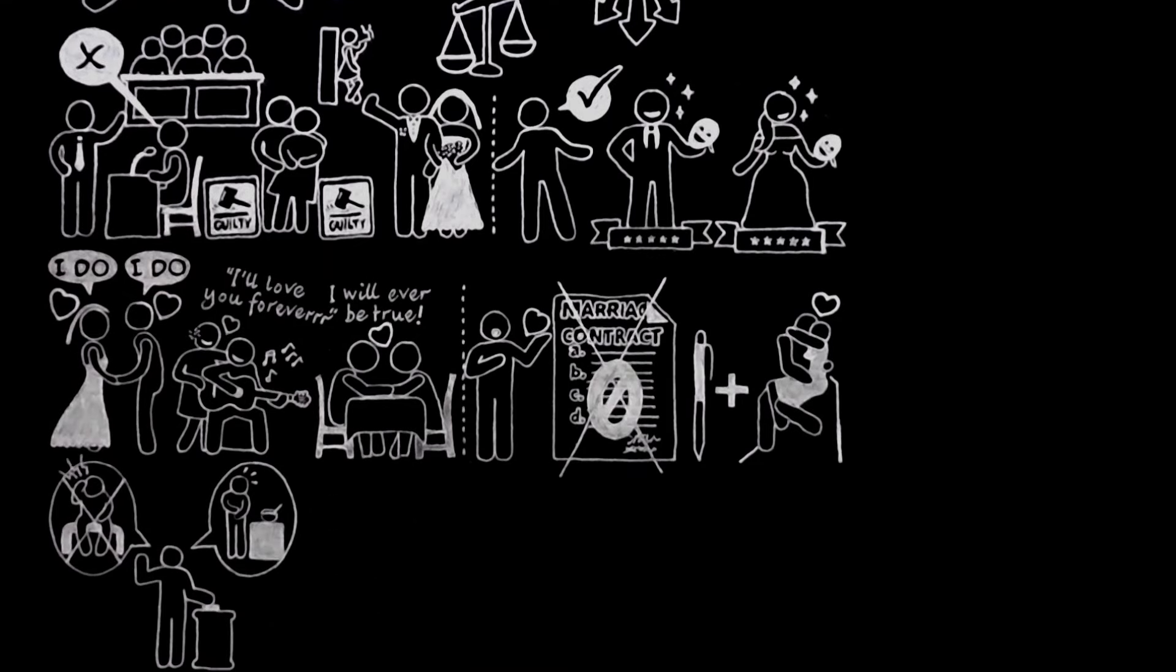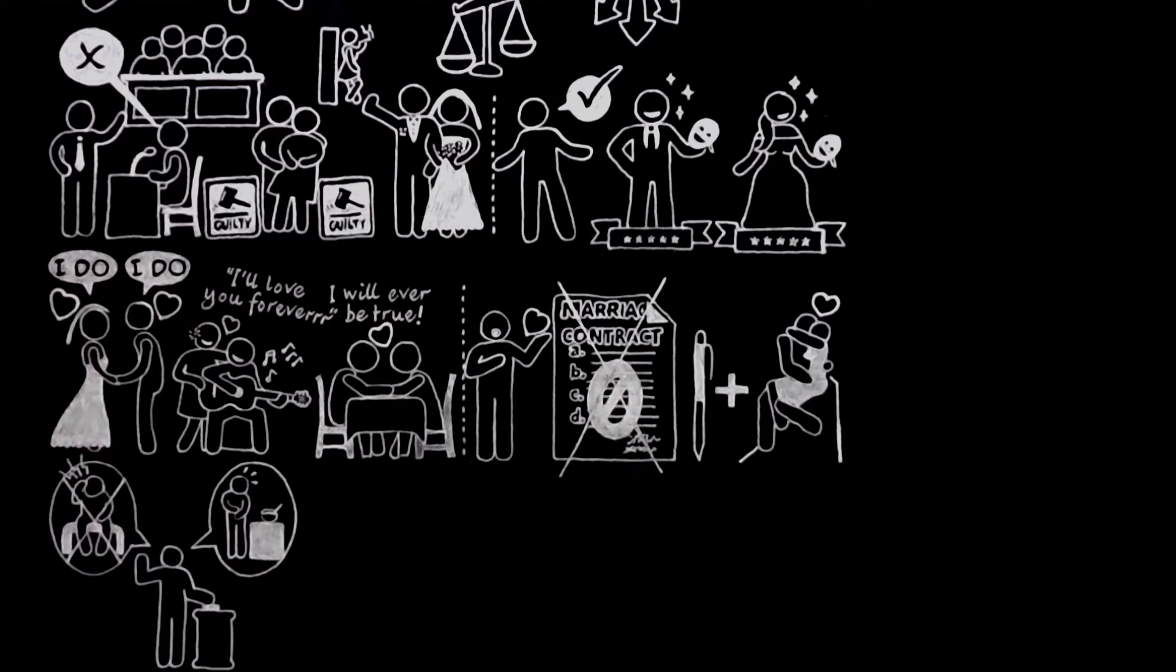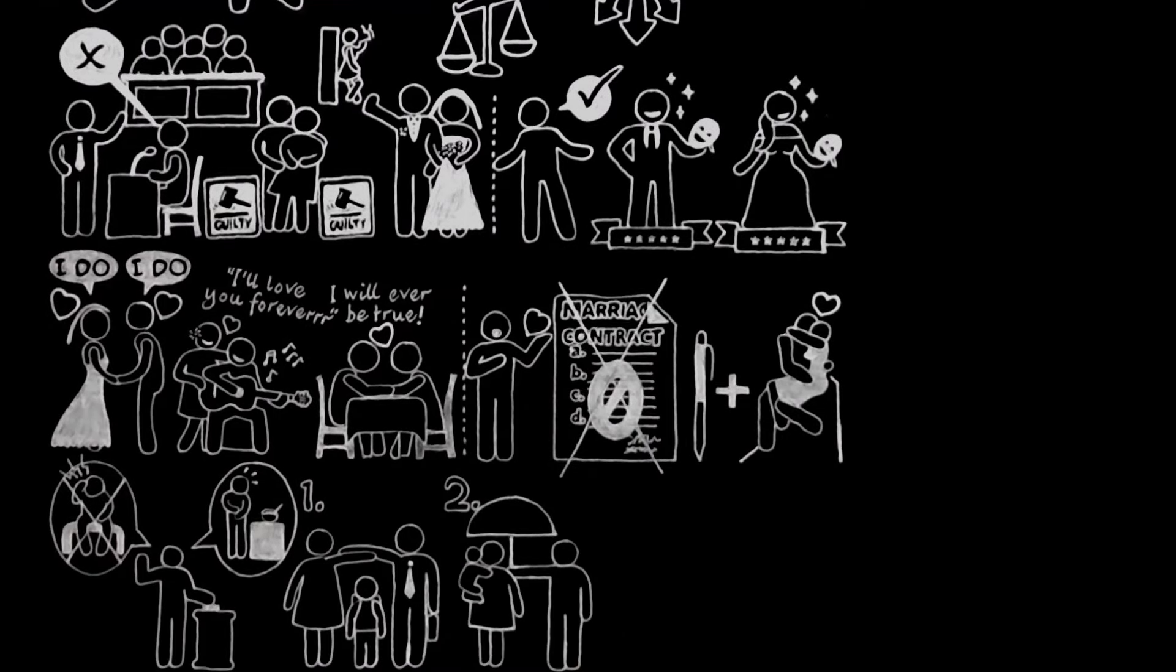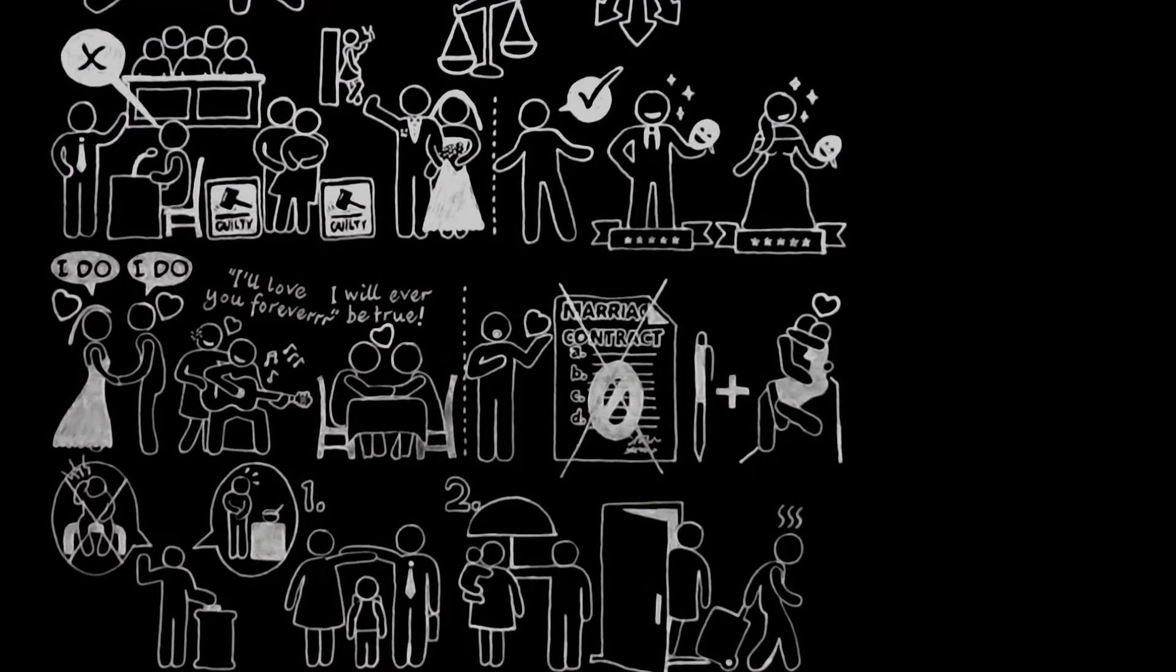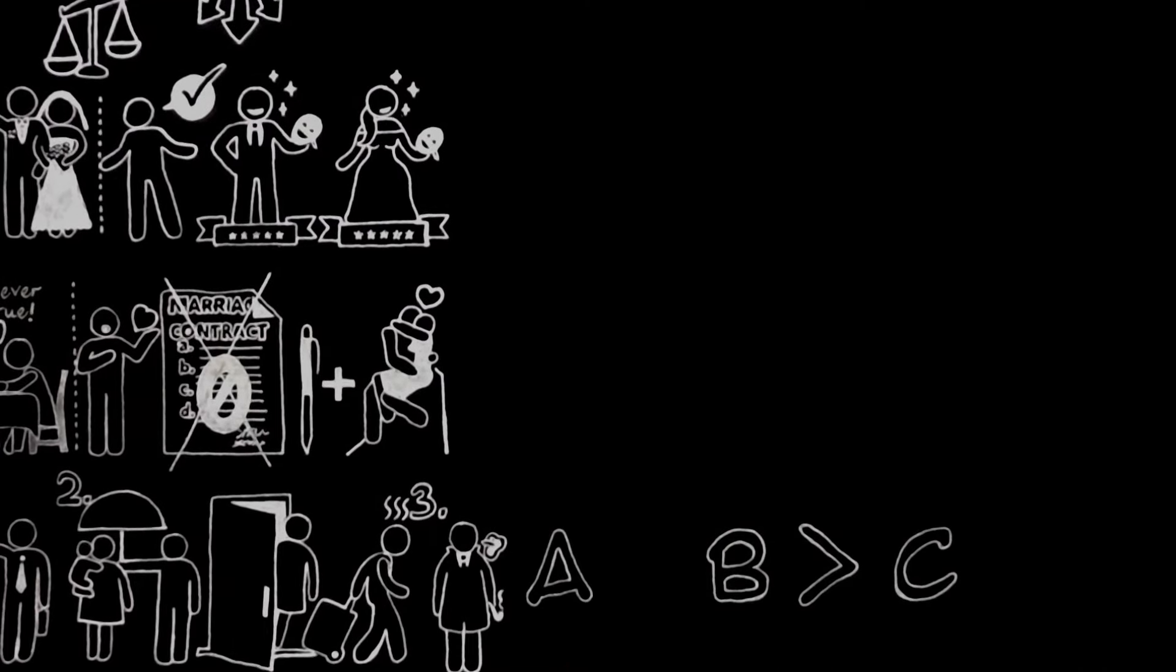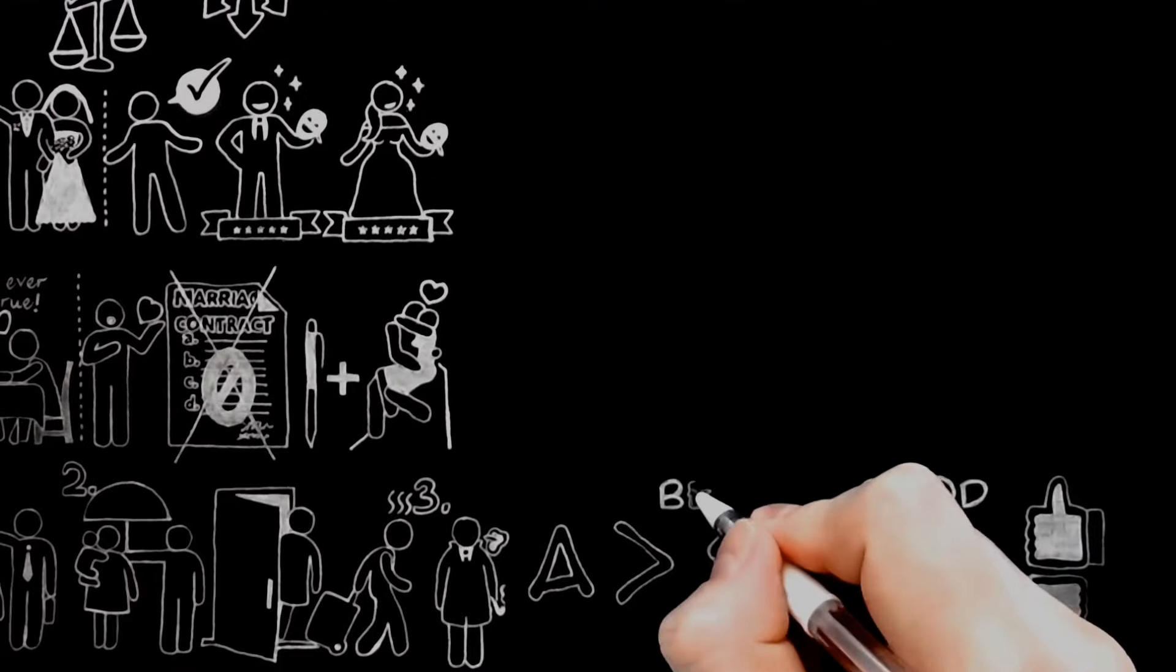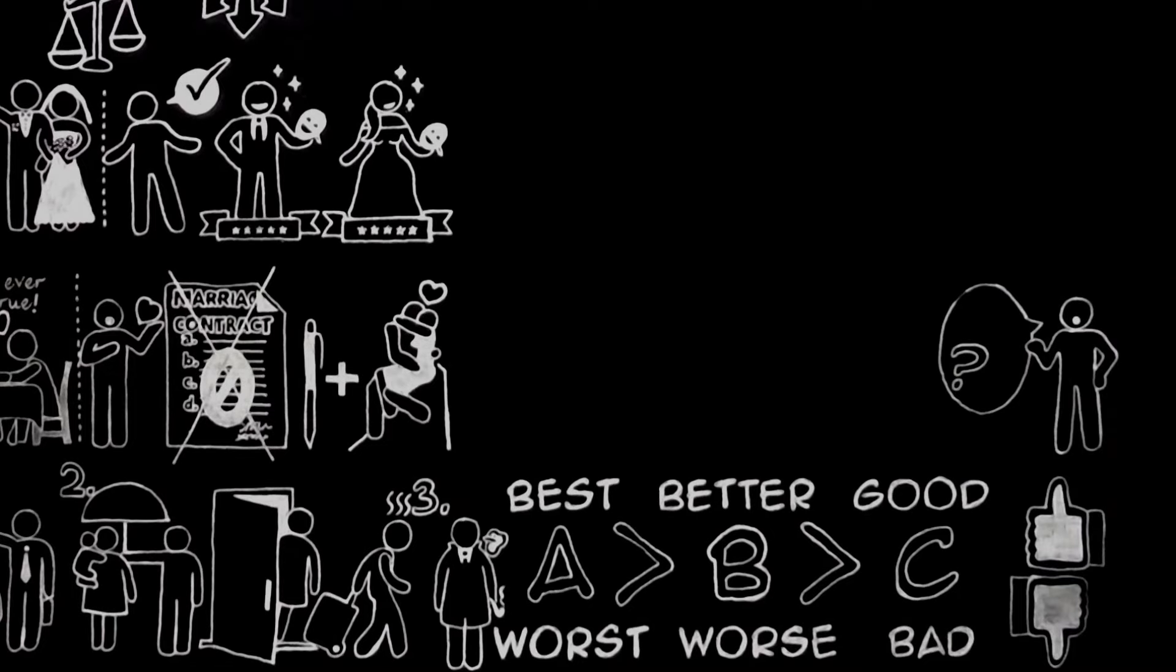But what, it may be asked, is the use of keeping two people together if they are no longer in love? There are several sound social reasons: to provide a home for their children, to protect the woman who was probably sacrificed or damaged her own career by getting married from being dropped whenever the man is tired of her. But there is also another reason of which I am very sure, though I find it a little hard to explain. It is hard because so many people cannot be brought to realize that when B is better than C, A may be even better than B. They like thinking in terms of good and bad, not of good, better and best, or bad, worse and worst.